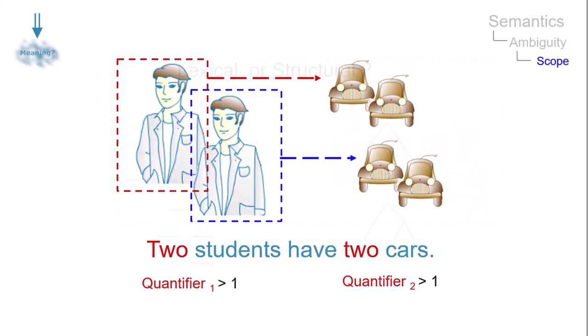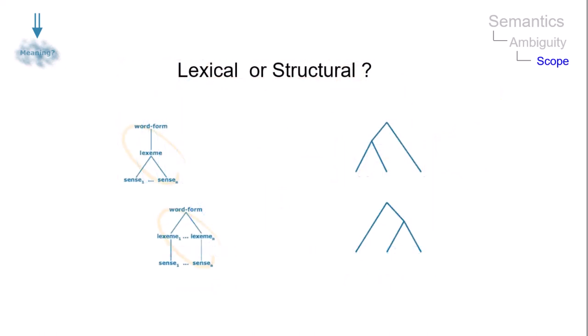Because this type of ambiguity arises from the relation between quantifiers, scope ambiguity is not lexical, but structural in nature.